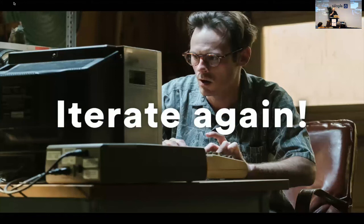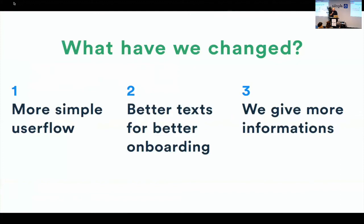Of course we iterated again. What have we changed? One: a more simple user flow — we removed a lot of steps. Two: better text for better onboarding, because mostly the wording was too big or too hard to understand for users. Three: we give more information, because really in mortgage, information creates trust and reduces complexity — and this is our goal.